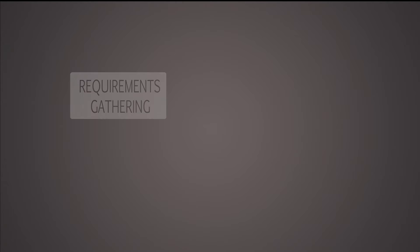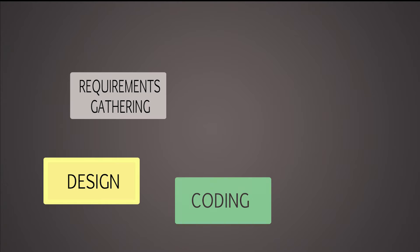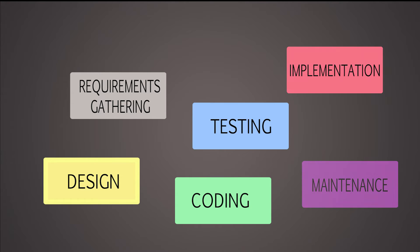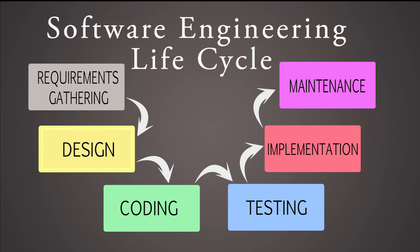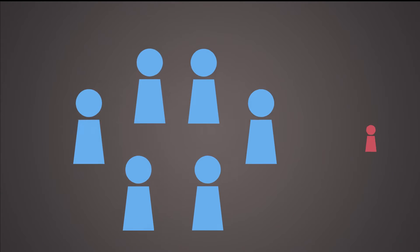There are numerous ways to go about creating software, but all of them include a basic list of steps which in the end result in a functioning and distributed program. These steps are part of the software engineering life cycle. Teams of software engineers are usually commissioned by a client to create a desired software product.